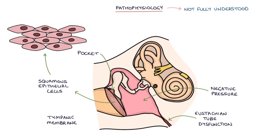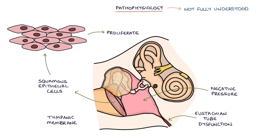Essentially, a small area of the tympanic membrane gets sucked inwards. The squamous epithelial cells of this pocket continue to proliferate and grow into the surrounding space, the bones and the tissues.